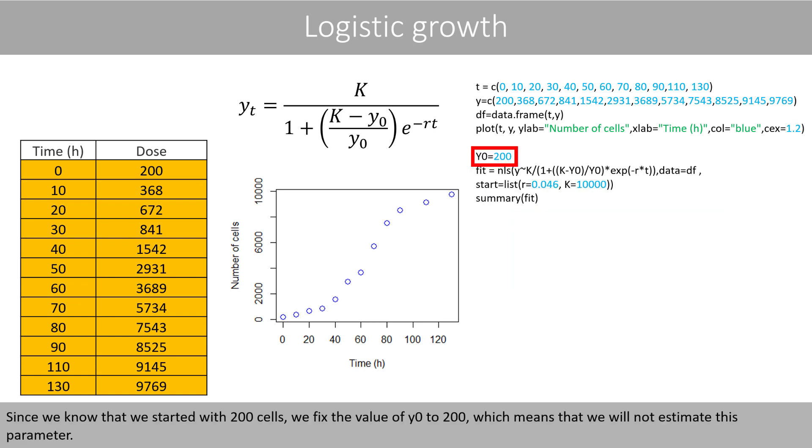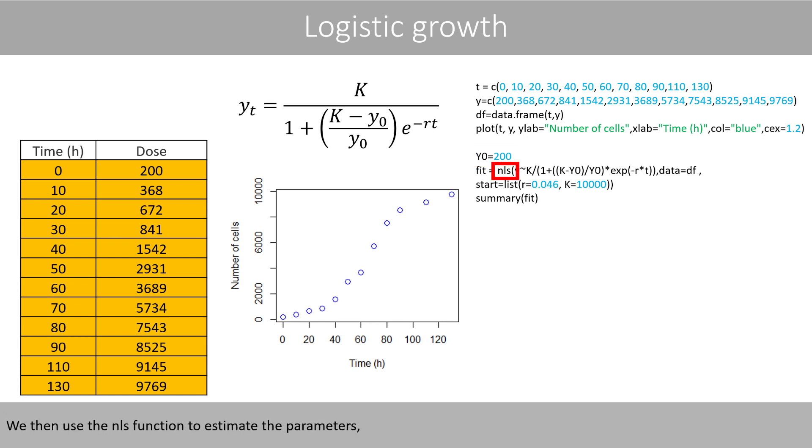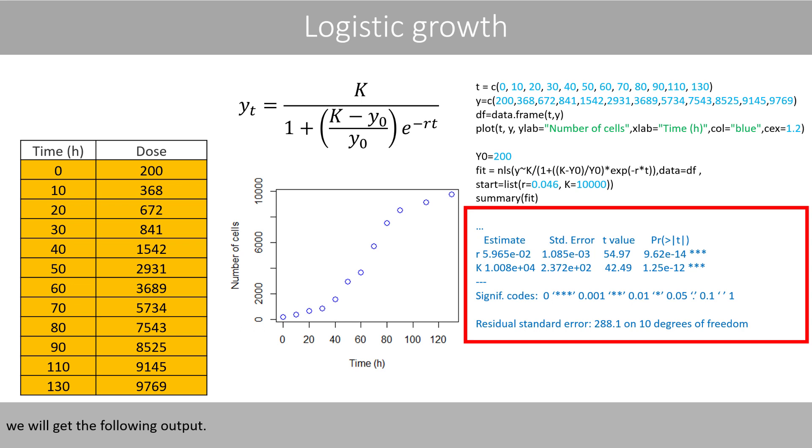Since we know that we started with 200 cells, we fixed the value of y-zero to 200, which means that we will not estimate this parameter. We then use the NLS function to estimate the parameters, where we plug in the equation and the data, and set the initial guesses of r and K to 0.046 and 10,000. If we run this code, we will get the following output.